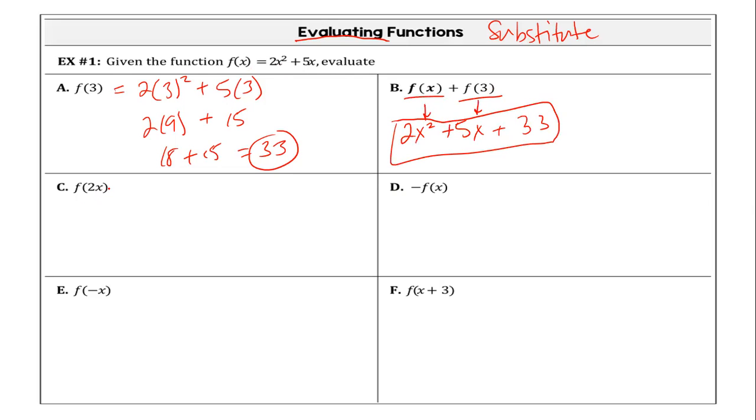On F of two X. So F of two X is now saying that all of my single X is now double. So we have two times two X squared plus five times two X. So that's going to leave you with two times four X squared plus 10 X. When you have a power, it goes to all of the factors inside. So we're left with eight X squared plus 10 X. And that is because I can't simplify anymore. You're not factoring. You're just evaluating.